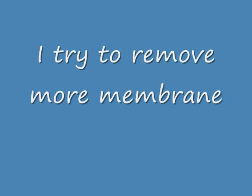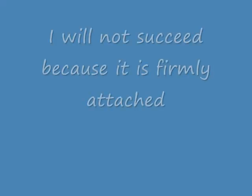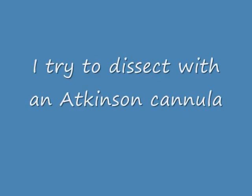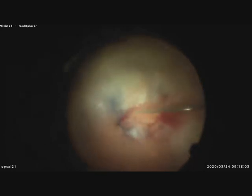This is all I can remove in terms of membranes in this eye. I will try to remove more membrane — I am working now at the posterior pole — but all these membranes are very, very firmly attached to the retina. I also try to dissect with an Atkinson cannula, but no chance. The same at the inferior pole: this white tissue is very firmly attached to the retina.